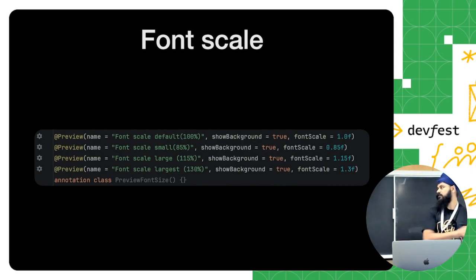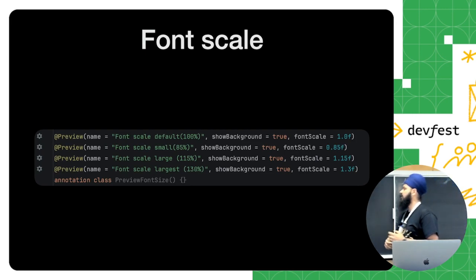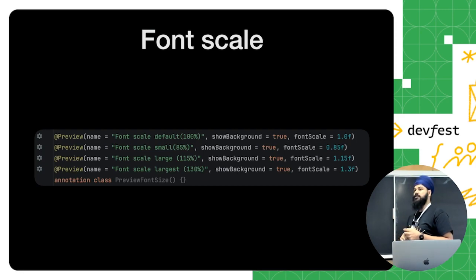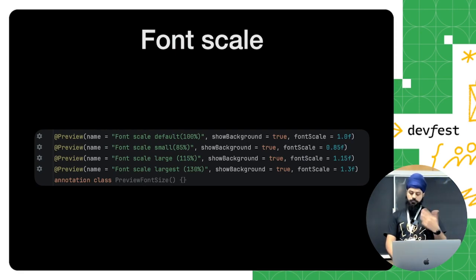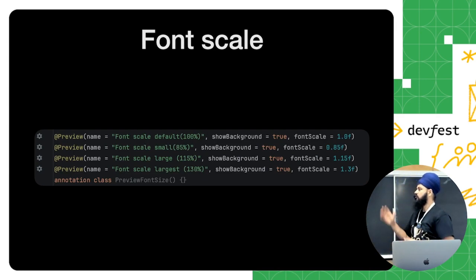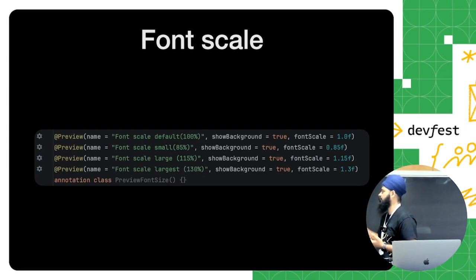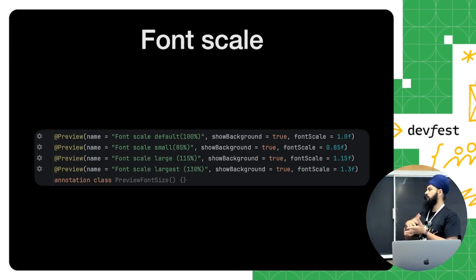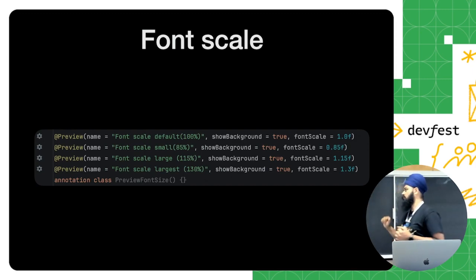Next is testing font scaling in Compose using previews. You can easily test whether your component behaves as expected when users change the font scale at the system level. You can test with font scale 1.0, 0.85, and up to 2.0. By combining all those previews together using a custom annotation — for example `@PreviewFontSize` — you can apply it to your Compose component and it will generate four previews at all different font scales simultaneously.